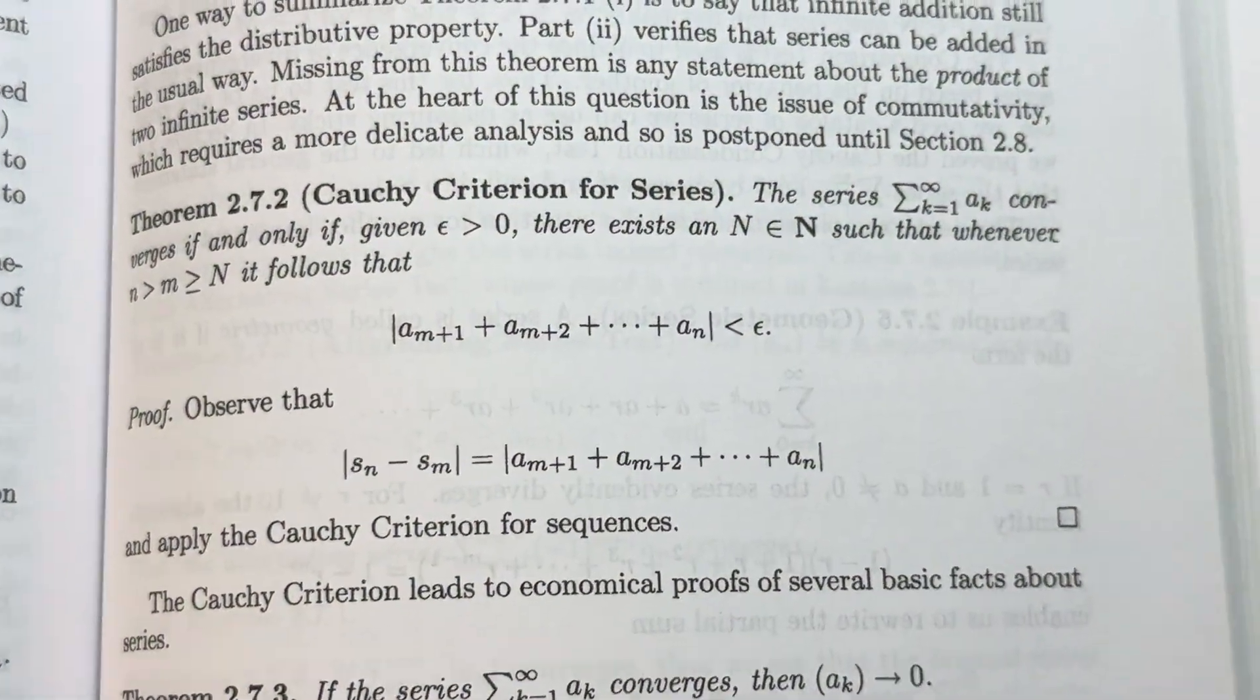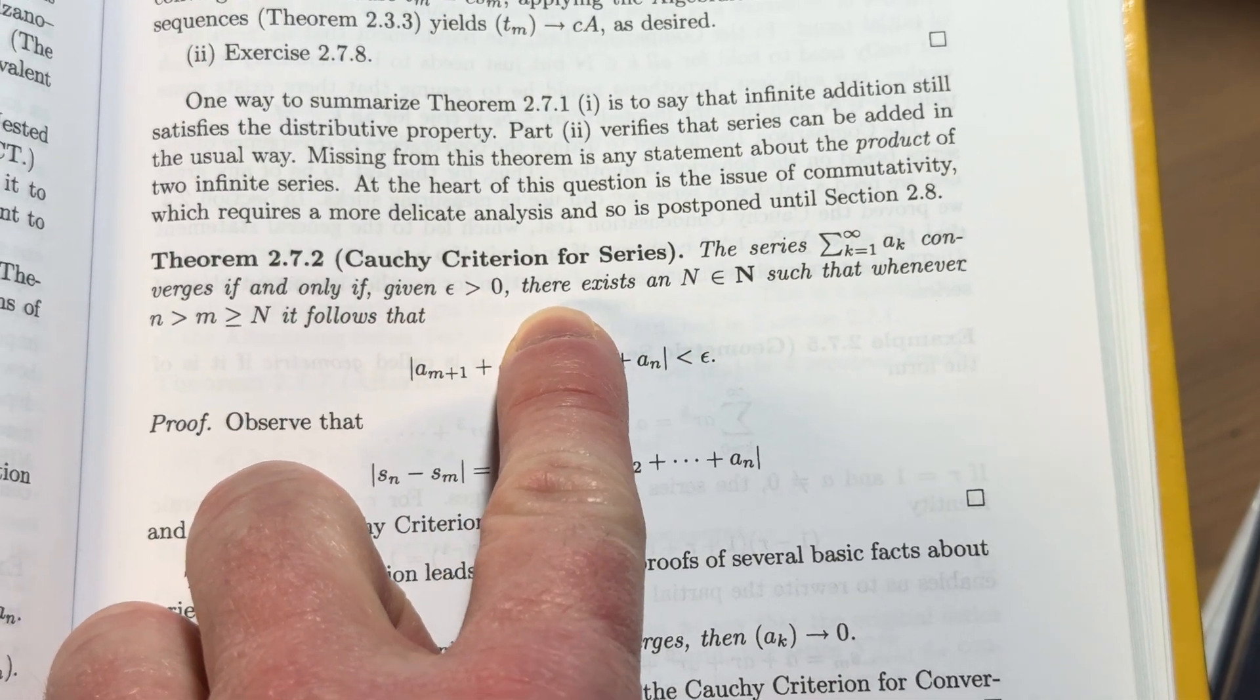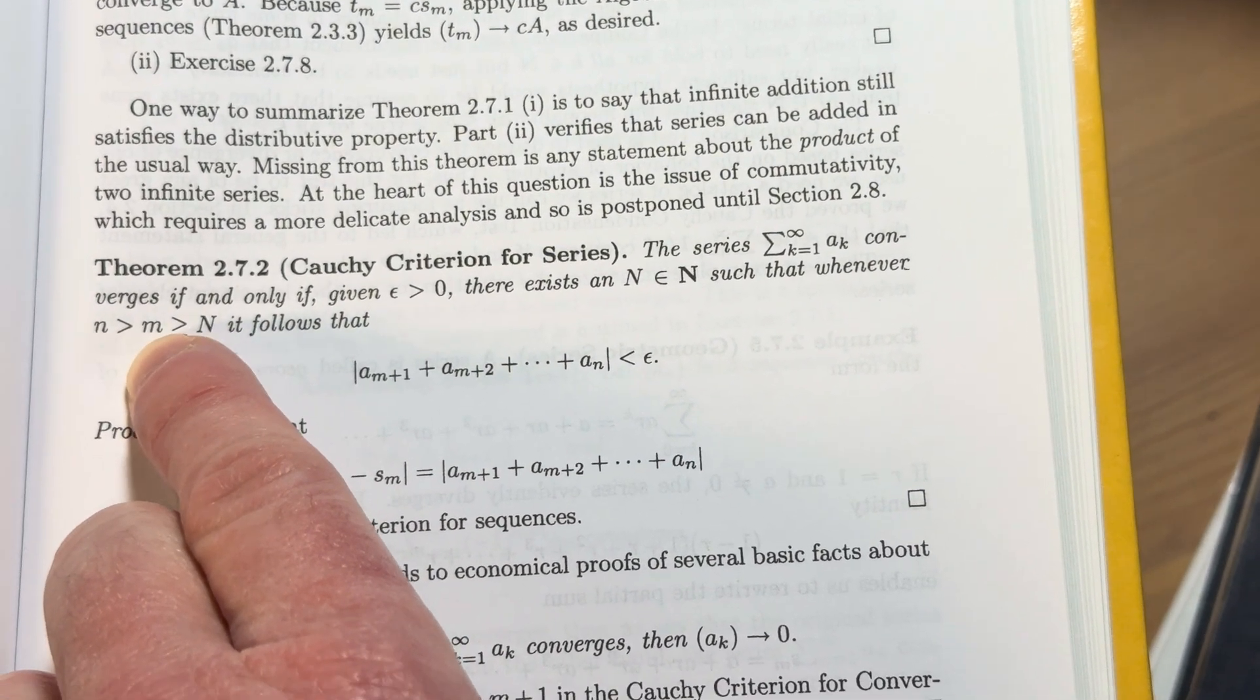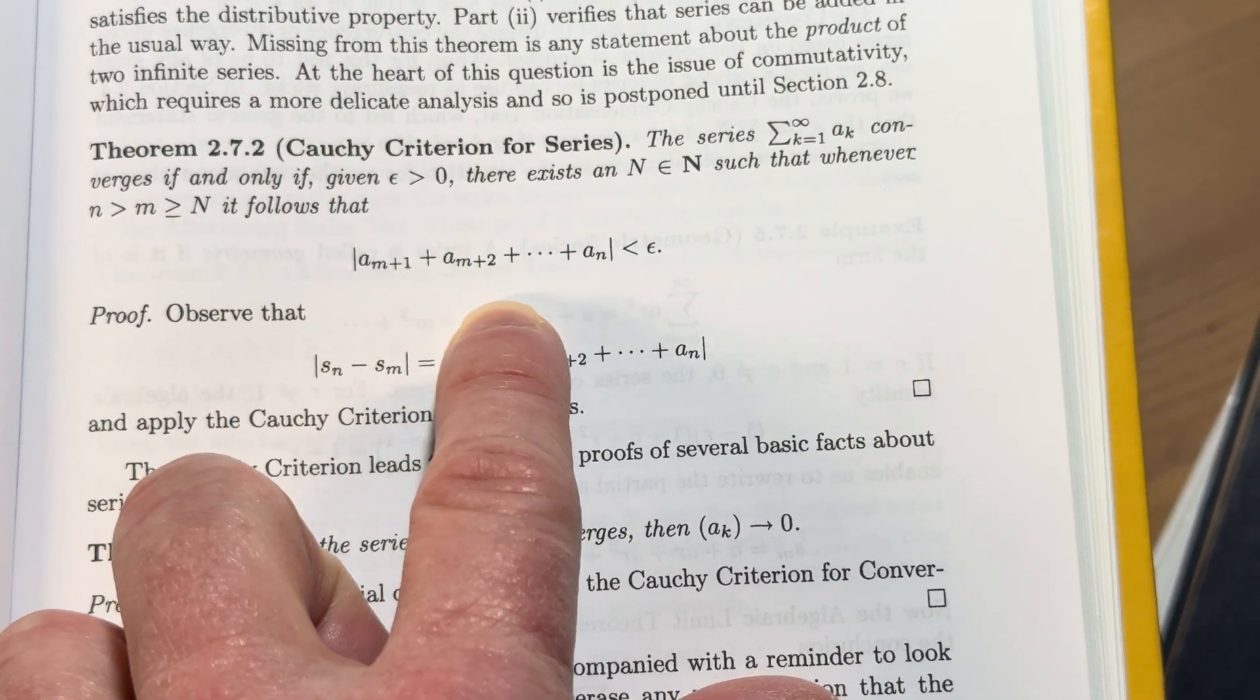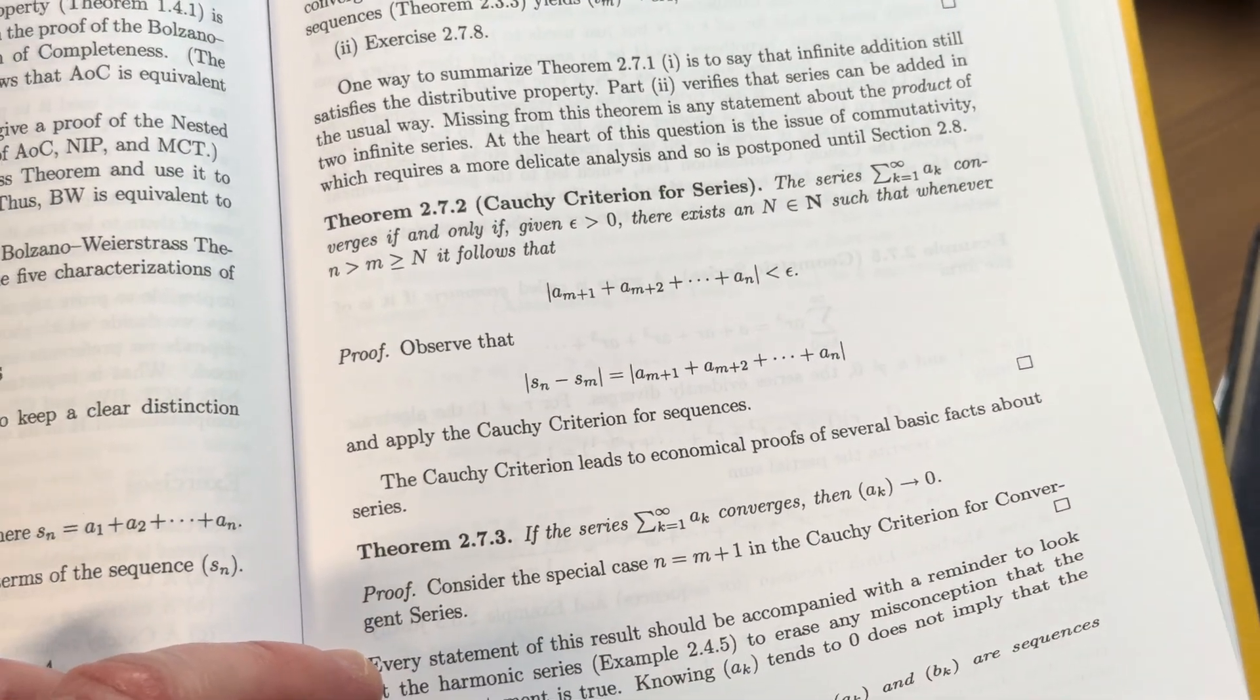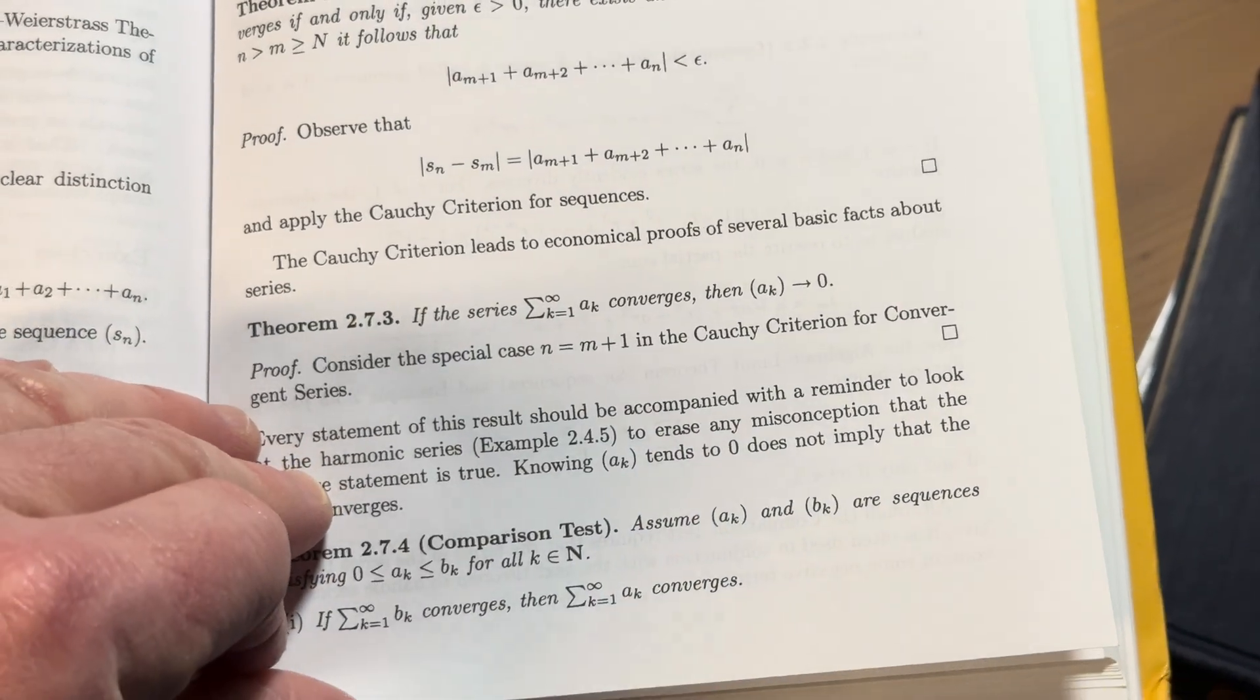Let's look at this. It says this series, this infinite sum, from k equals 1 to infinity of a sub k, converges if and only if, given epsilon greater than 0, there exists a natural number, capital N, such that whenever little n is strictly bigger than little m, and they're both greater than or equal to big N, it follows that the sum can be made less than epsilon. Cool. There's different ways to write this. You can write it a little bit differently as well.